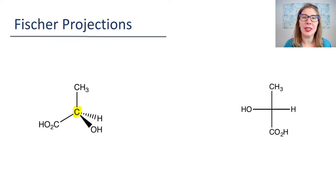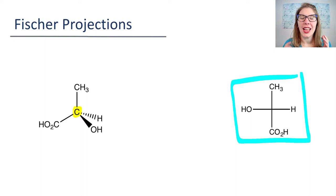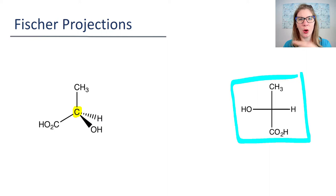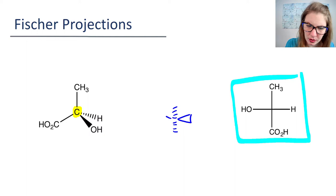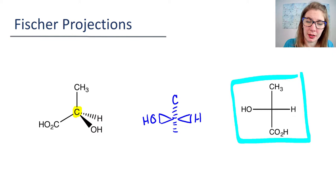If we take this and go through a series of rotations, we can end up with this structure here, and this is a Fischer projection. When we look at this Fischer projection it's drawn as if those carbons are at a 90 degree bond angle, but you know that they are not. What's happening in this Fischer projection is the bonds that are horizontal are actually wedge bonds. So if I draw this, I'm going to draw the structure boxed in blue in such a way that I'm showing those bonds are still 109.5 degrees.